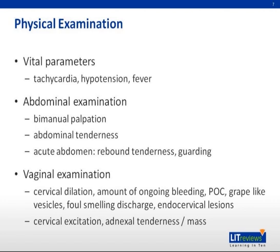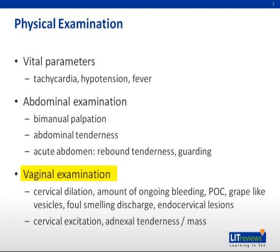Following this, a thorough physical examination should be performed. Vital parameters should be charted, looking out specifically for signs of hemodynamic instability. The abdomen should be palpated, especially if the patient complains of abdominal pain, assessing for evidence of acute abdomen, involuntary guarding, and rebound tenderness. A speculum examination is performed to assess the amount of per-vaginal bleeding, whether the cervical os is open or closed, presence of products of conception, or foul-smelling discharge. Vaginal examination may detect adnexal tenderness, masses, or cervical excitation.